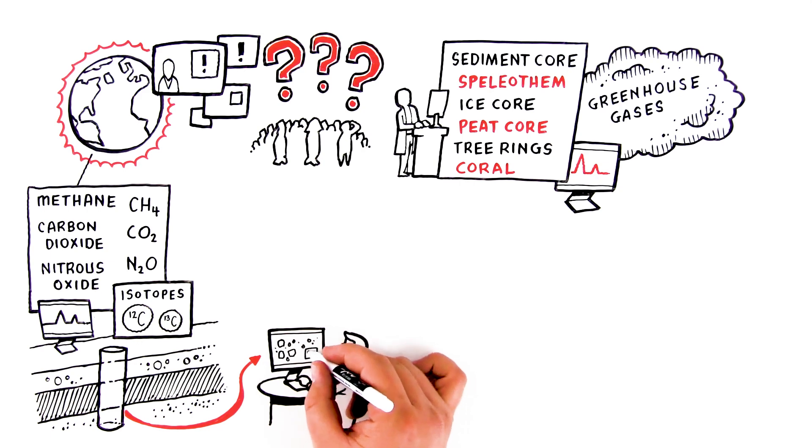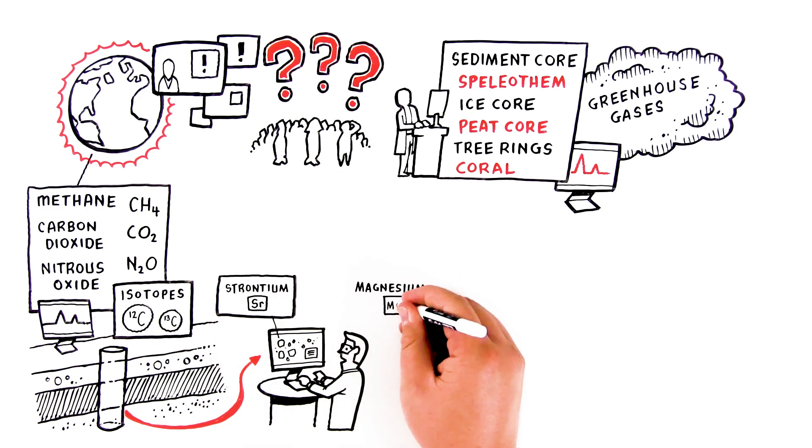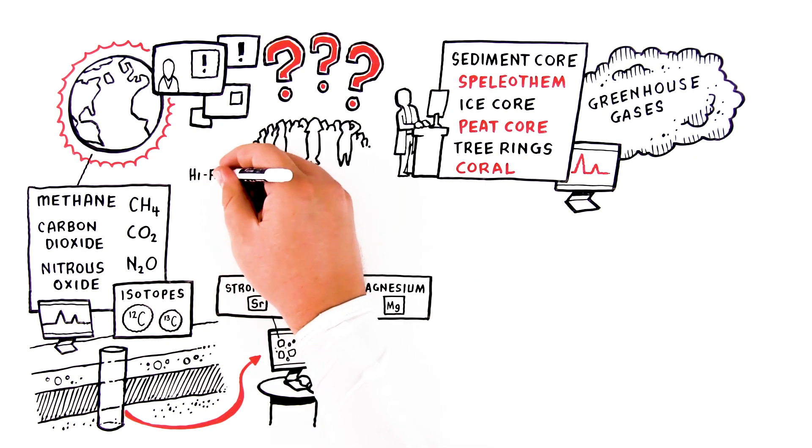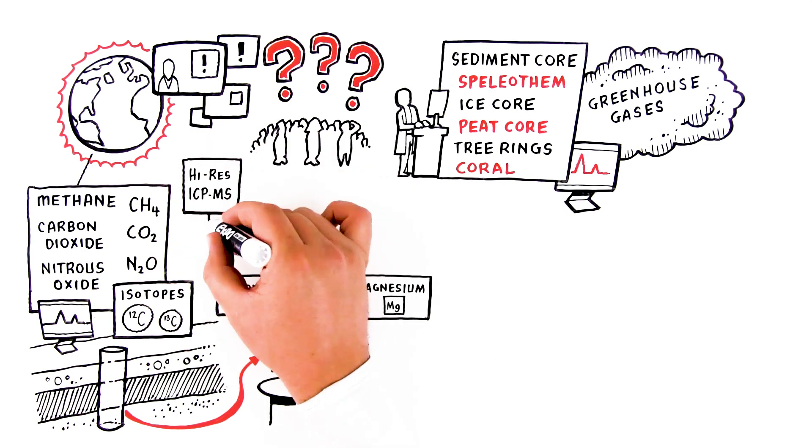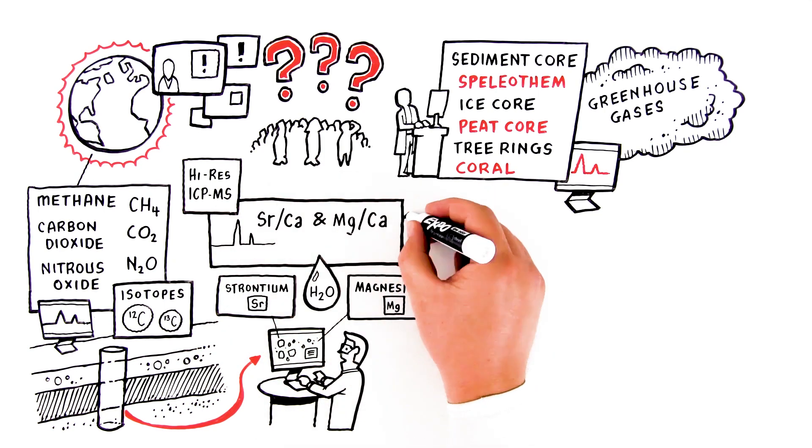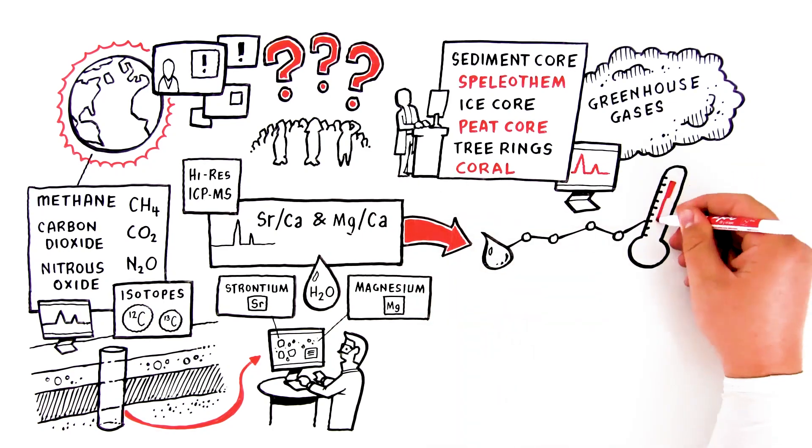Coral skeletons contain relatively high amounts of strontium (Sr) and magnesium (Mg) and are sensitive to the water temperature at the time of deposition. High-resolution ICP-MS can be used to determine strontium-calcium and magnesium-calcium ratios in fossil corals, which are indicators for past surface water temperatures.